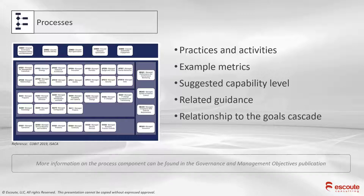Although the goals cascade relationships are at the governance and management objective level, if you're looking at each of these from the process component, you can use the goals cascade information to determine your most valuable processes based on their relationship to alignment goals and enterprise goals.